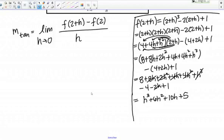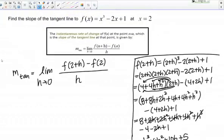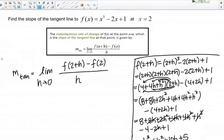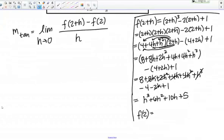Alright, so now we've done the messiest part of this problem. While we're over here working on the side, let's also just go ahead and calculate f(2). So here I'm just plugging in 2 to my function, which was x³ - 2x + 1, so that's 2³ - 2(2) + 1, so that's 8 - 4 + 1, which gives us 5 again. So here are my two important pieces.